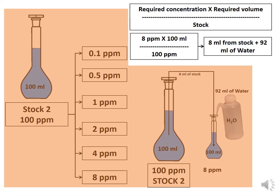For a required concentration of 8 ppm, using the same formula: 8 ppm × 100 ml ÷ 100 ppm secondary stock, we get 8 ml. Taking 8 ml of solution from the 100 ppm stock and mixing with 92 ml of water gives 8 ppm of the required concentration. Thank you.